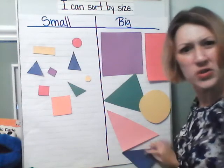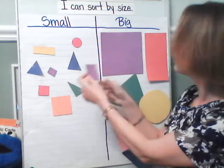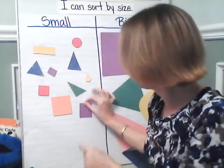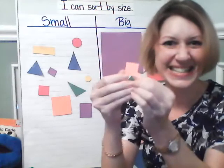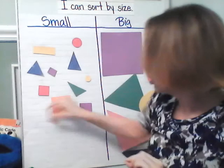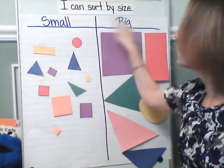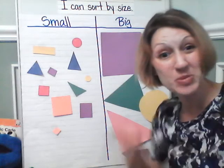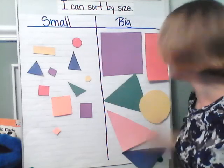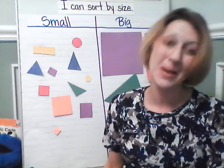Boys and girls, I'm so proud of you. You're doing a great job. Now we're almost finished. What about this square here? Compared to this one, it looks pretty small, doesn't it? Let's put it on the small side. And what about this one? You see this square? Is that big or small? It's small. Boys and girls, look what we did. We sorted these shapes. I can sort by size. We had all the shapes and you helped me sort them in groups. Here's the small group and here's the big group. Wonderful job, boys and girls. Thank you for helping me sort by size.